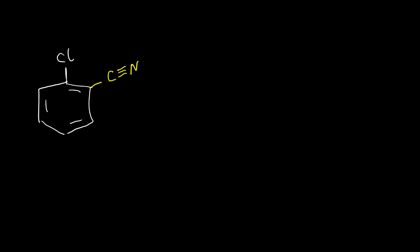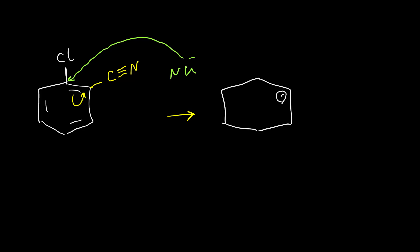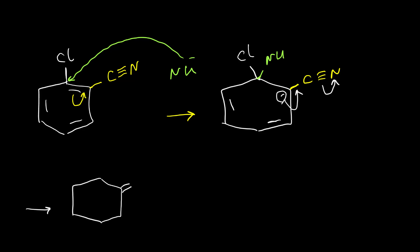I'm going to explain the mechanism with this compound. In the first step, the nucleophile attacks this carbon, which has a partial positive charge due to the inductive effect of chlorine, and then pushes the pi bond to the ortho position. We have a negative charge on this carbon next to the cyanide group, and the nucleophile is also attached here. This negative charge can form resonance with the cyanide group, giving us another resonance structure for this anion.